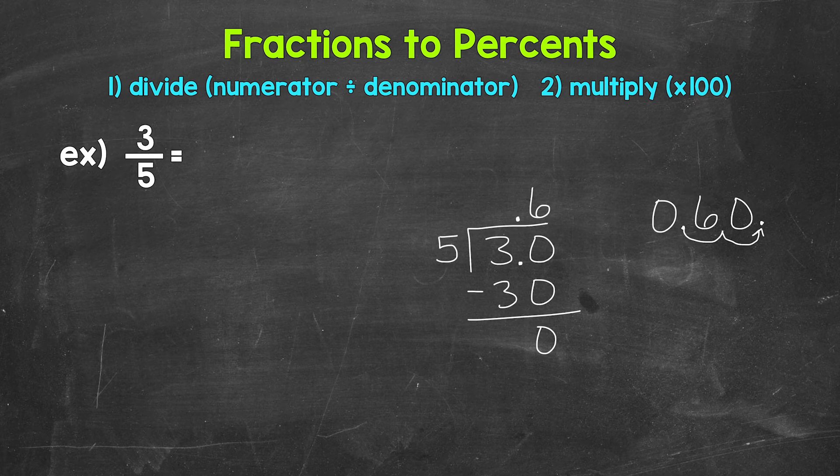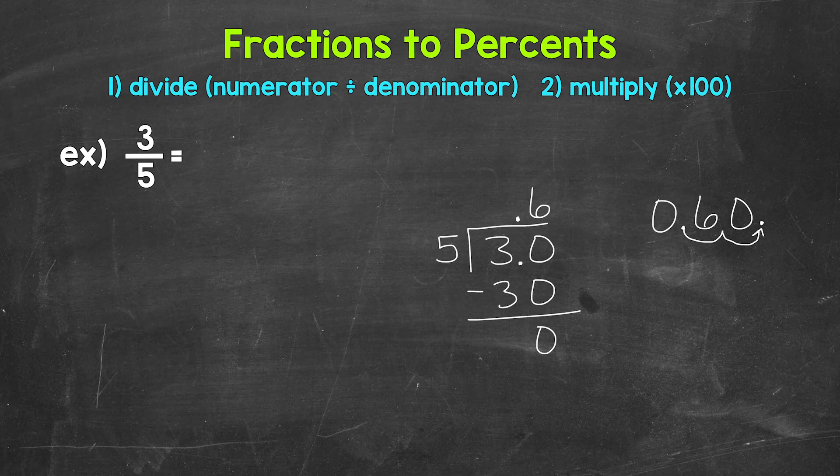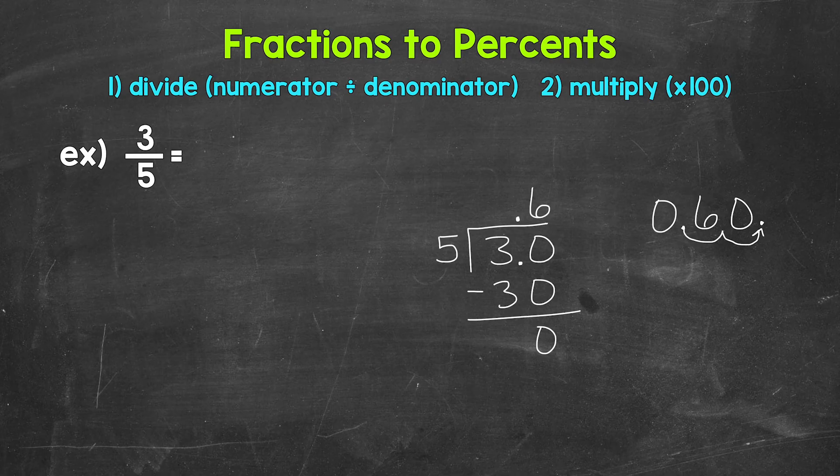And fill this gap, this place with a zero. So we get 60, 60 percent. 3 fifths equals 60 percent.